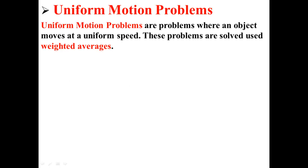Uniform motion problems are problems where an object moves at a uniform speed. These problems are solved using weighted averages.